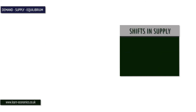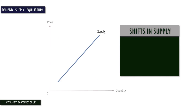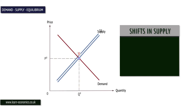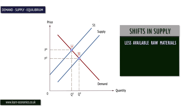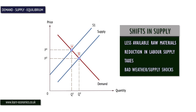A shift to the left is a decrease in supply. Assuming the price is constant, a shift in supply to the left could be caused by less available raw materials, a reduction in the supply of labour, taxes on goods or services, or bad weather or other disruptive natural events.